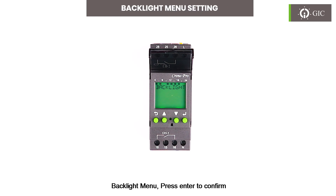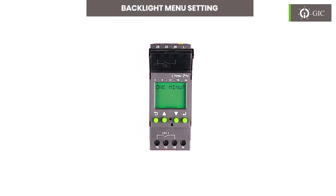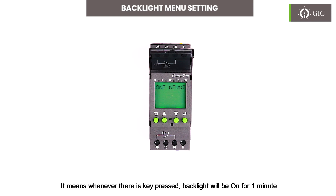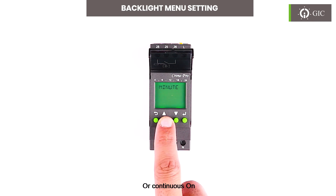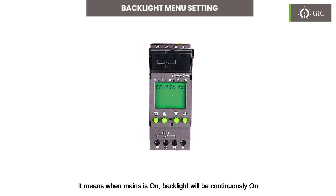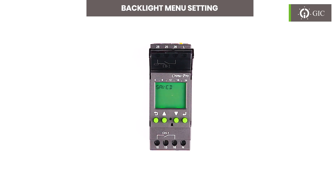The Backlight menu — press enter to confirm. The user can select between '1 Minute On,' meaning the backlight turns on for 1 minute whenever a key is pressed, or 'Continuous On,' meaning the backlight stays on continuously while mains is on. Note that backlight is only available when supply is connected to the device. Press enter to confirm.